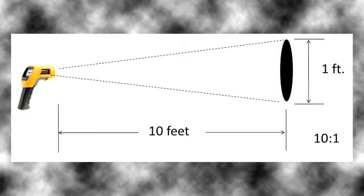So the laser would be pointed at the center of this 1 foot diameter circle and the IR thermometer would be measuring the average temperature of that 1 foot diameter circle.